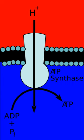The molecules of the chain include peptides, enzymes, and others. The final acceptor of electrons in the electron transport chain during aerobic respiration is molecular oxygen, although a variety of acceptors other than oxygen such as sulfate exist in anaerobic respiration.